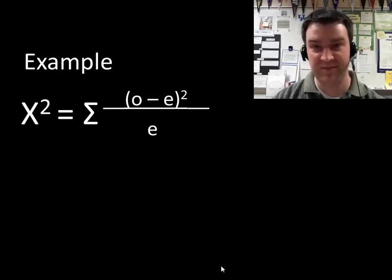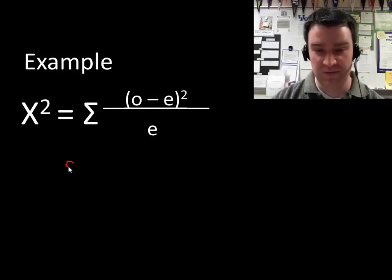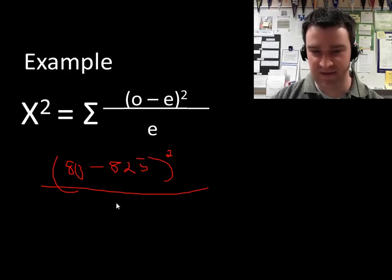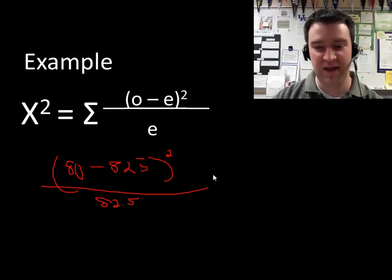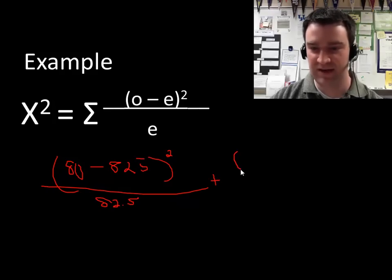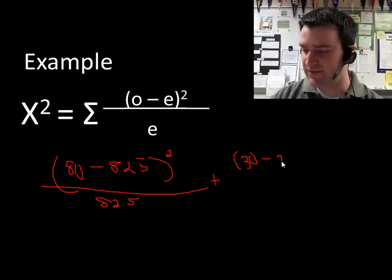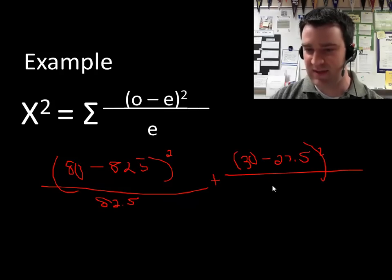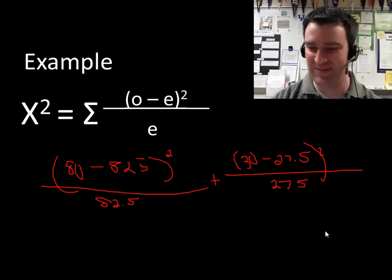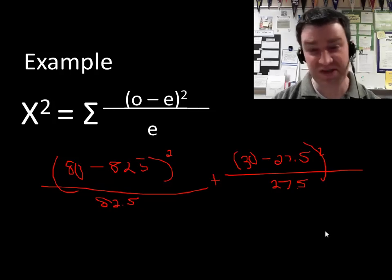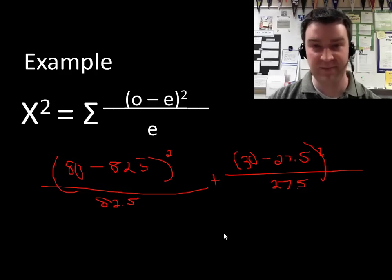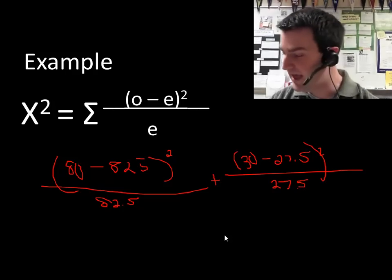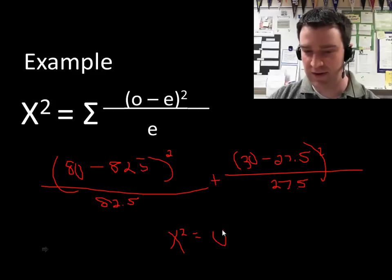Now we can plug those values into the formula. For each data point — the 80 flies and the 30 flies — we want to figure out how different that was from expectation. So we do 80 minus 82.5, square that, and make it a fraction of what we expected, 82.5. We also consider our 30 data point: 30 minus the 27.5 prediction, square that, and make it a fraction of the expected 27.5. That's the formula — take all your data points, subtract from expectation, and add them together to get the total amount of difference.